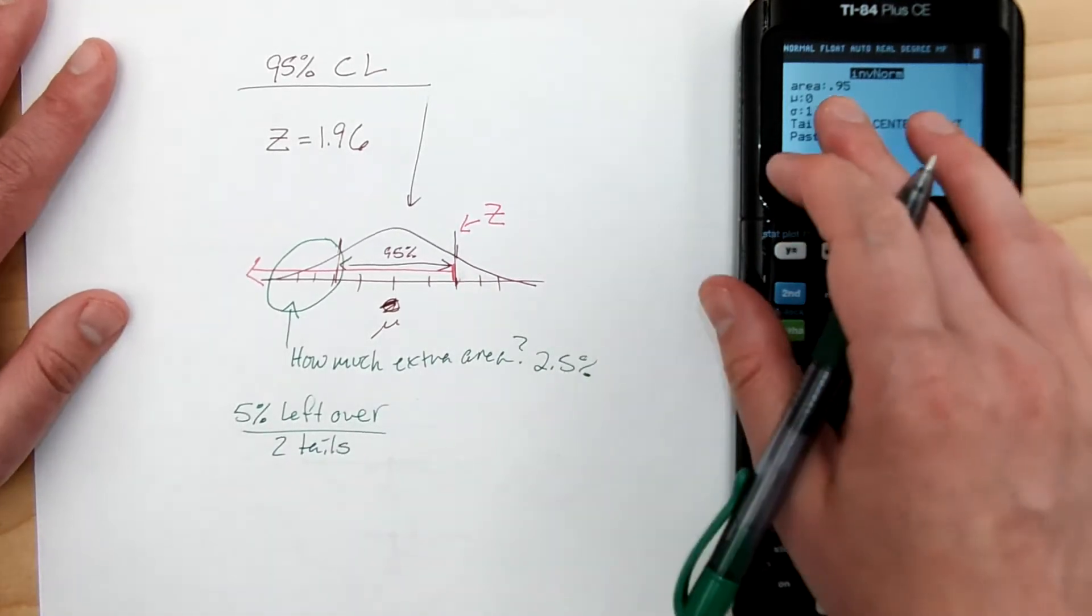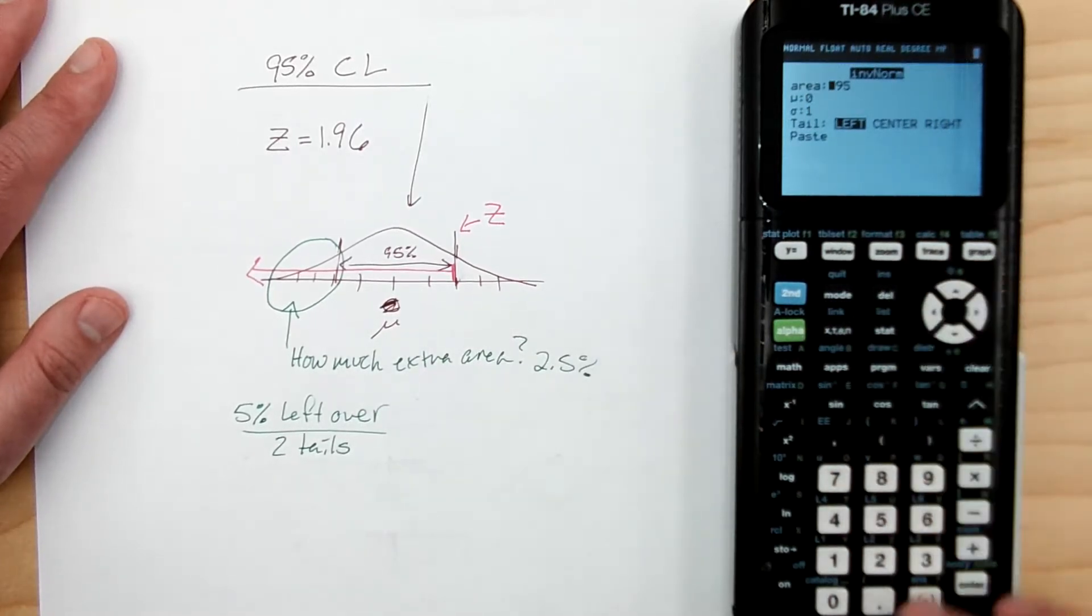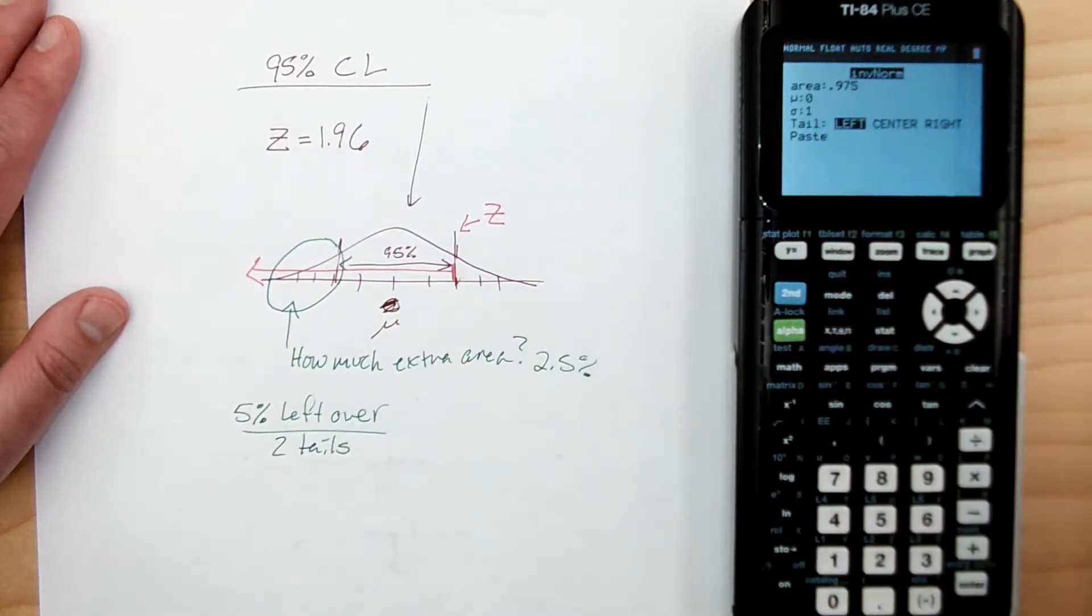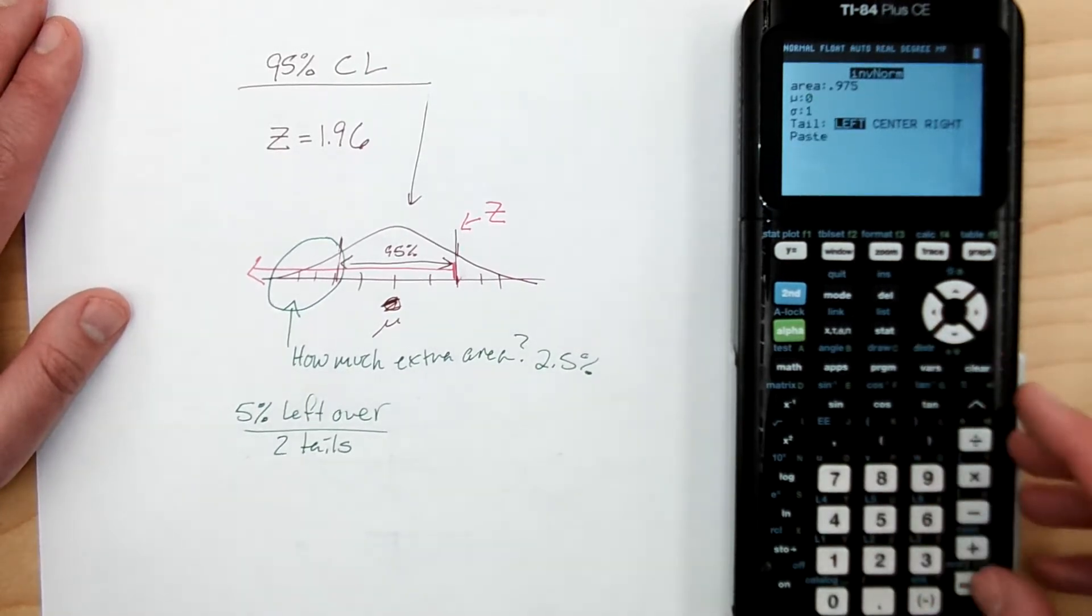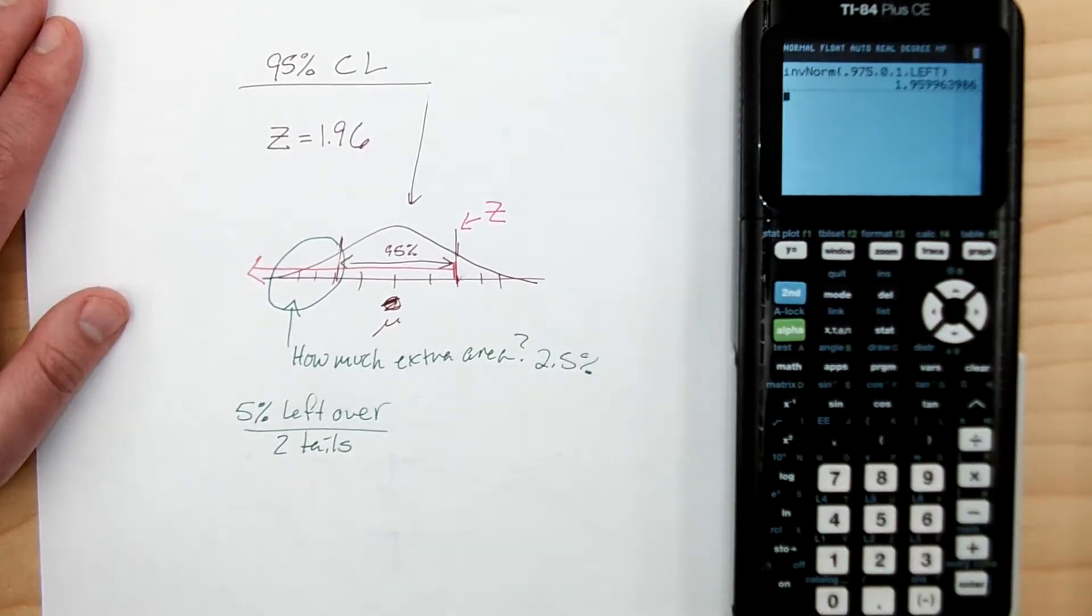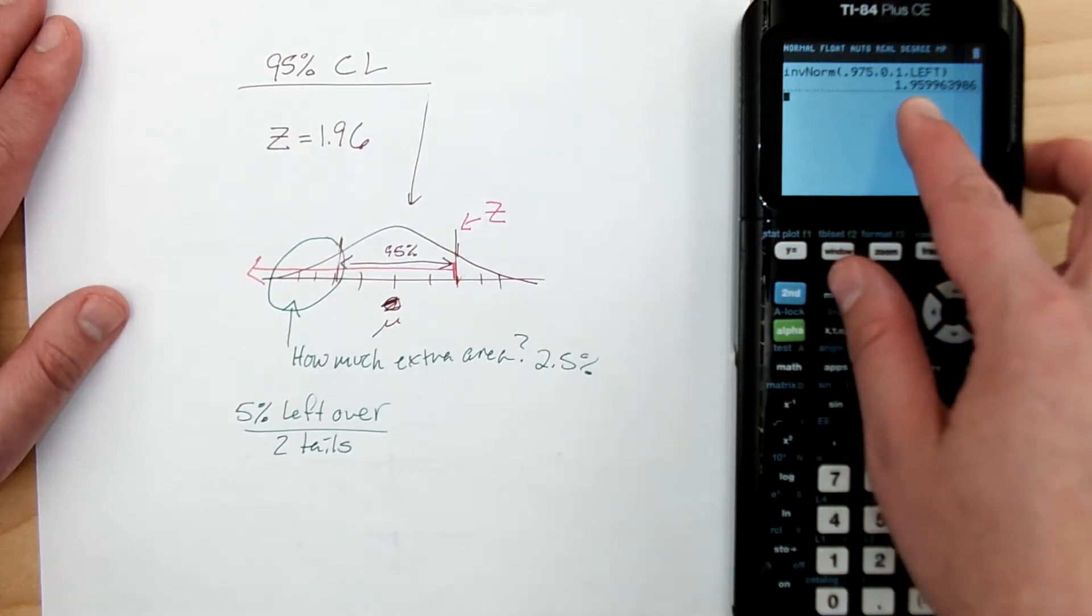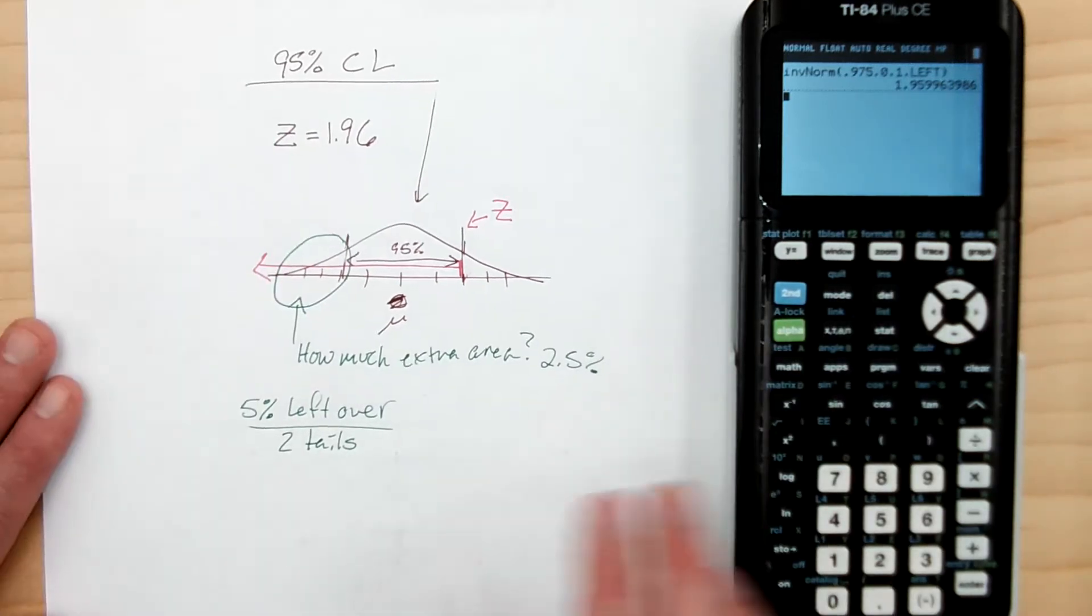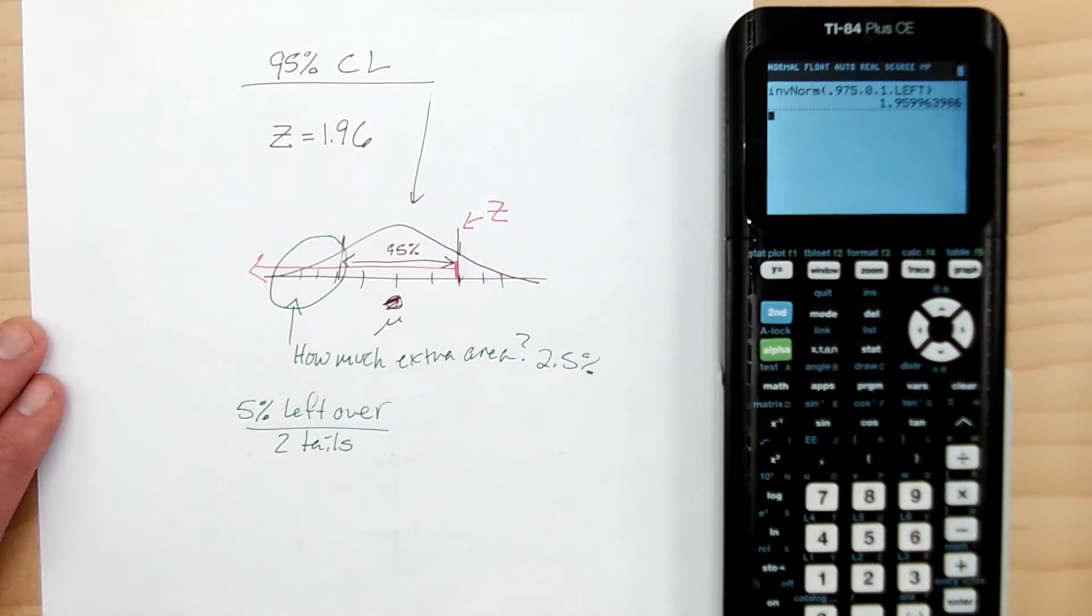So instead of 95%, that means that total area is actually 97.5%, or 0.975. So I will go ahead, I will paste that, and here it gives me 1.95999, exactly what I had before, and I can see that my Z score is 1.96.